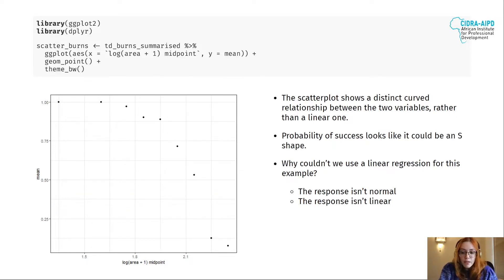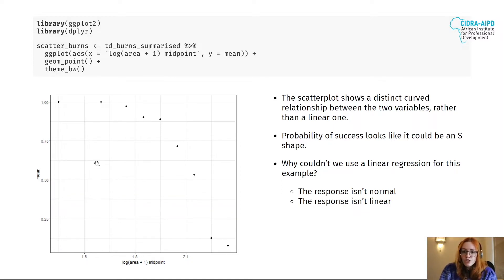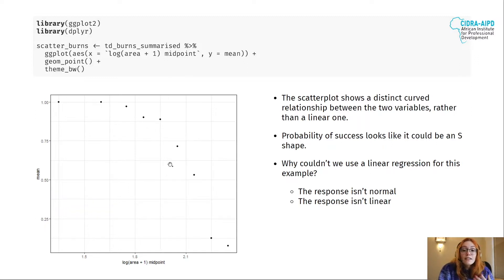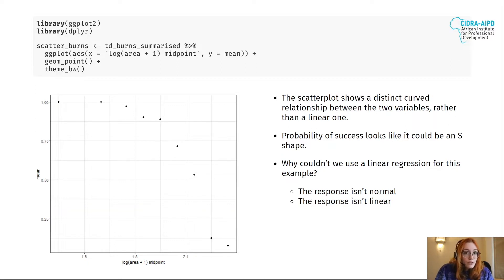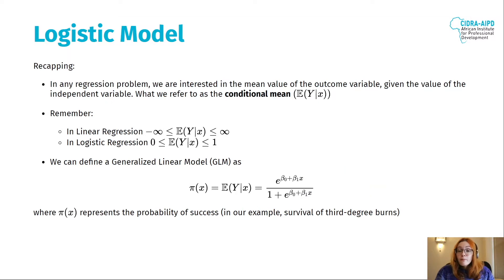Going back to our problem of predicting the survival mean using the area — by plotting this scatter plot, we can see that there is a curved relationship between our variables, between area and mean. It's not a linear relationship, so I can't apply a linear regression; it's clearly not linear and the response is clearly not normal. It looks like an S-shape, so we could probably use logistic regression. Let's recap the theory a little bit.